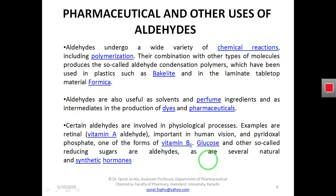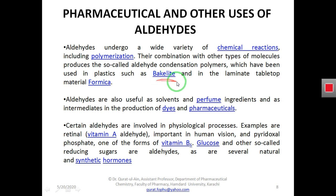Now we discuss the uses of aldehydes. Aldehydes are very good polymerizing agents and can easily polymerize. Their combination with other molecules produces aldehyde condensation polymers, which are used in plastics such as Bakelite and in laminate tabletop materials like Formica.